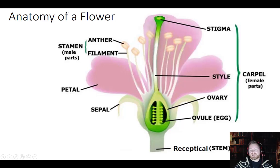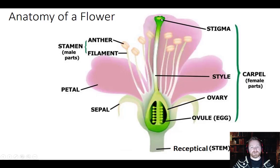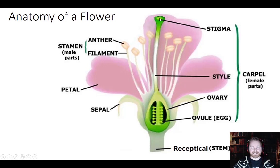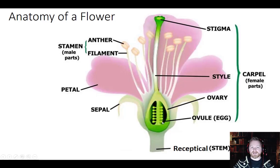The carpel is made up of the stigma, style, and the ovary. The stigma is kind of like a pad where pollen being transferred to it can stick. The style is just a holder that holds the stigma up and away so that pollen can actually get to it. And the ovary actually houses the ovum, which is the egg. Females have ovaries — female humans have ovaries, and inside are eggs. Another word for egg is ovule, so don't let that throw you off: the stigma, style, and ovary, with eggs also called ovules inside.